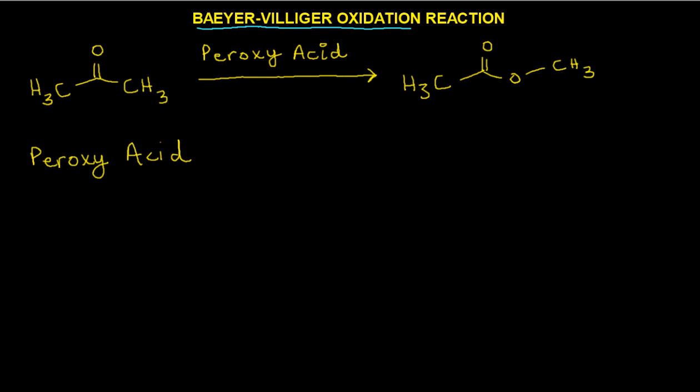To get an overview of this reaction, we start off with our ketone here. I've drawn acetone as our starting ketone. We react it with a compound known as a peroxyacid, and the end result is we get a compound known as the ester. We essentially transform our ketone into an ester through the reaction.